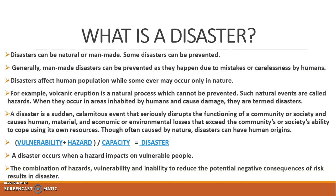Generally, manmade disasters can be prevented as they happen due to mistakes or carelessness by humans. If we are aware of the consequences of certain activities and such activities are prevented before a disaster occurs, then you can avoid the disaster from taking place. Disasters affect human populations, while some events may occur only in nature — some have a natural aspect and some have a human background.